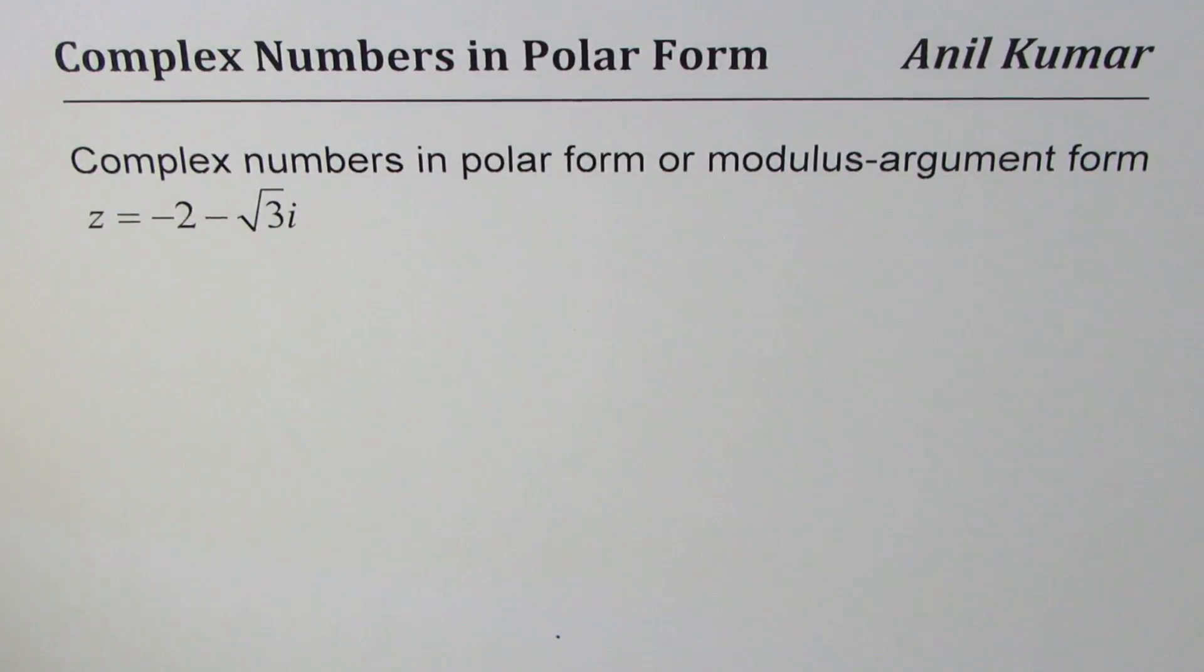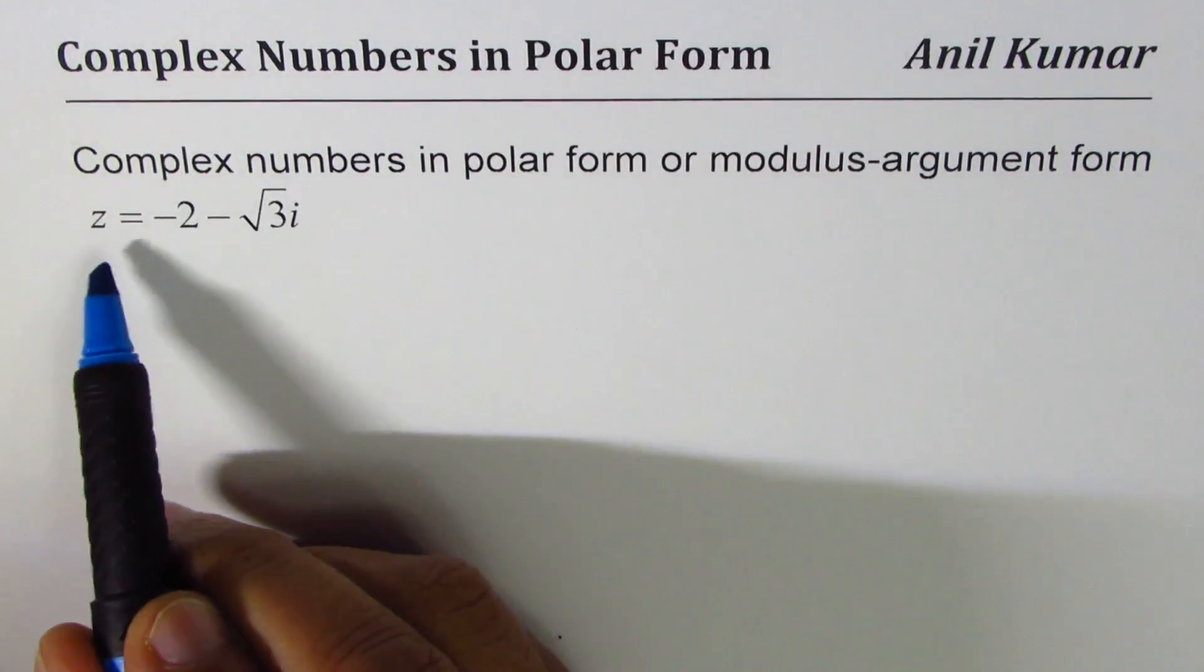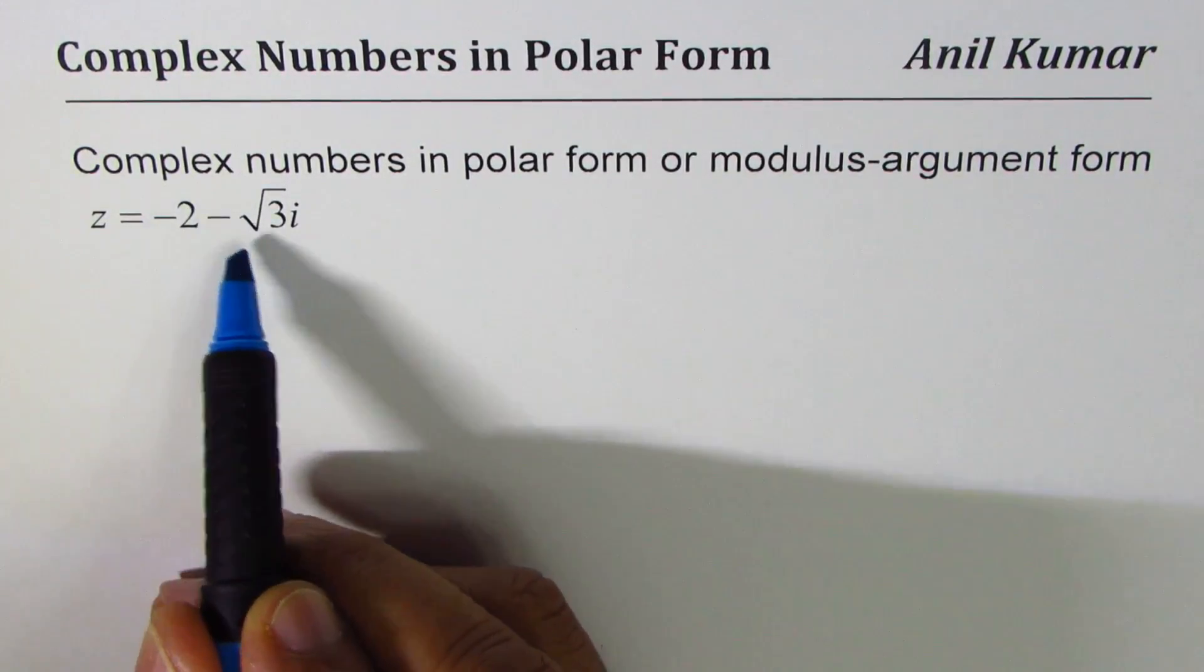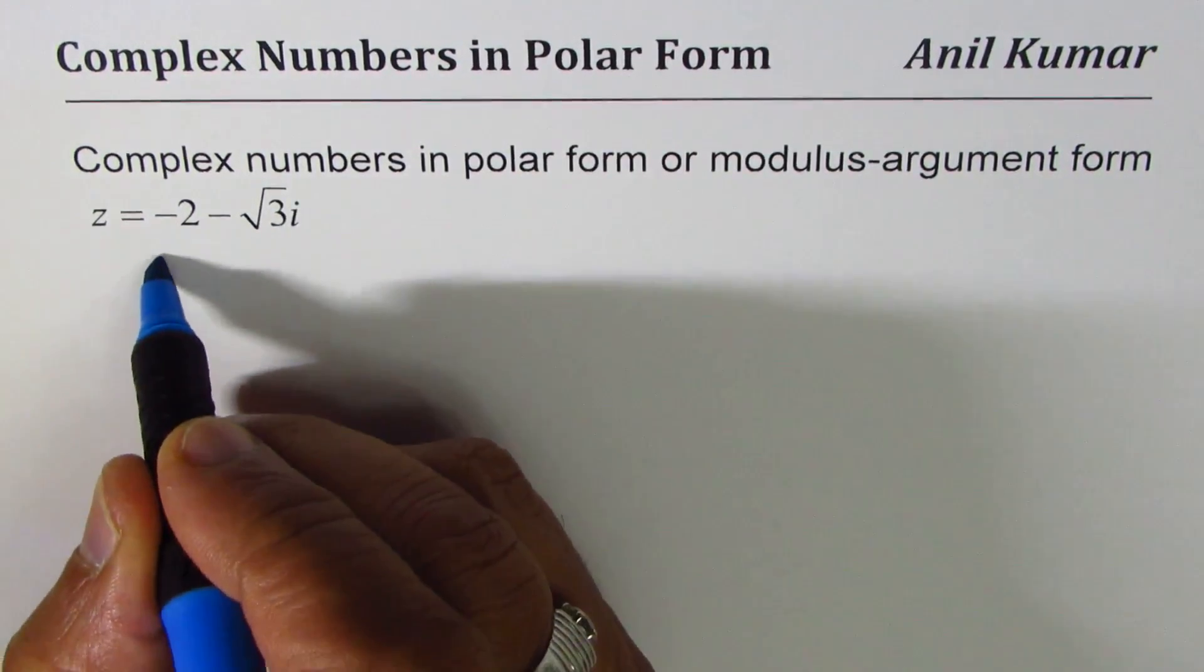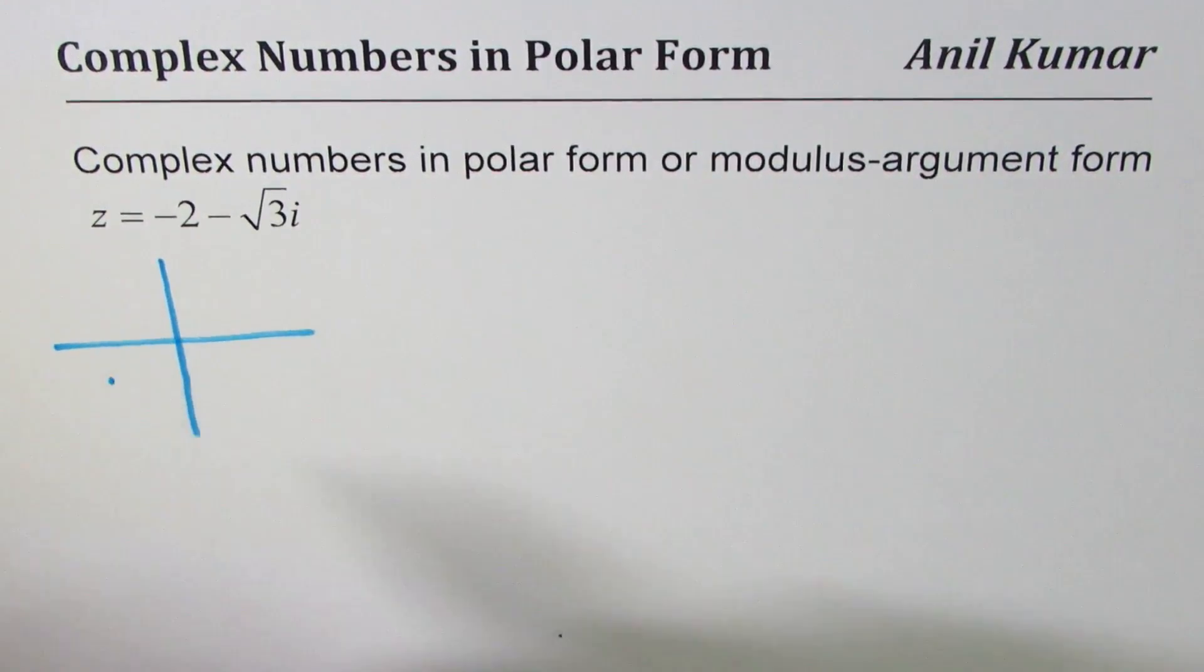I'm Anil Kumar sharing with you a technique of writing complex numbers in polar form. In this particular example, the complex number is -2 - √3i.